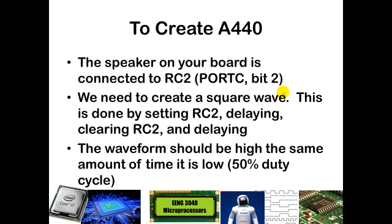Then you're going to have to create a square wave, and so you're going to set RC2, you're going to delay for half of the period, then you're going to clear RC2, and then also delay for half of the period. And so that way you're going to create a nice 50% duty cycle square wave, such that you're on for half the time in the period, and you're off for half the time in the period.